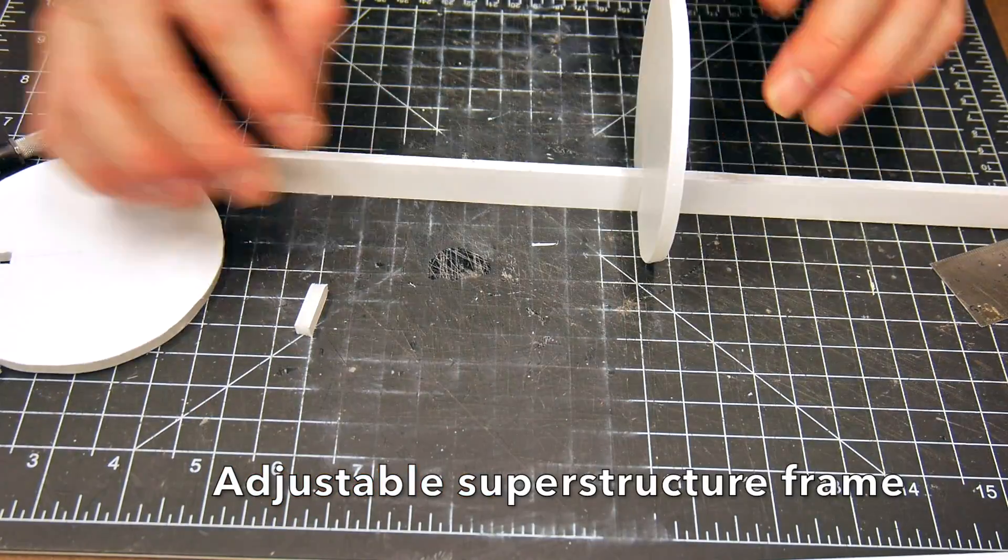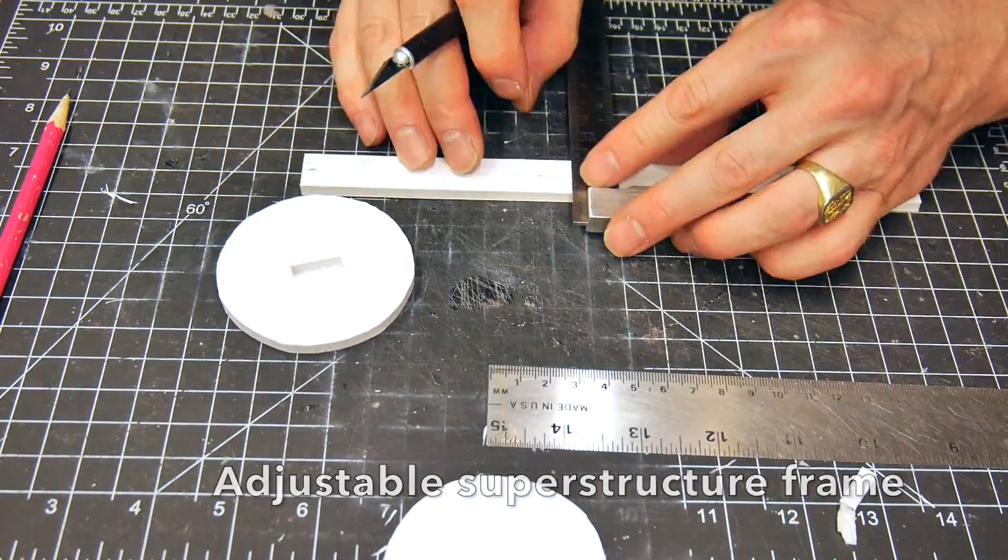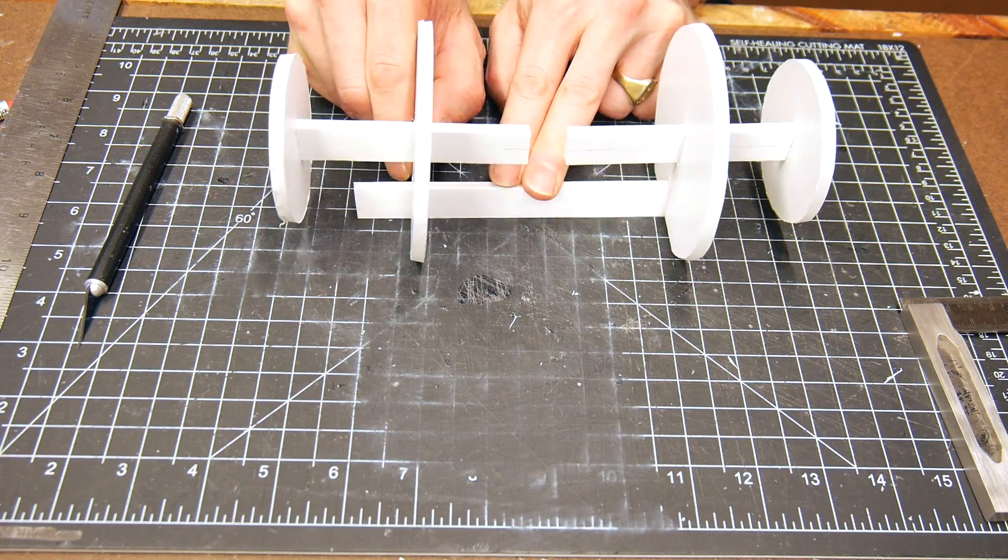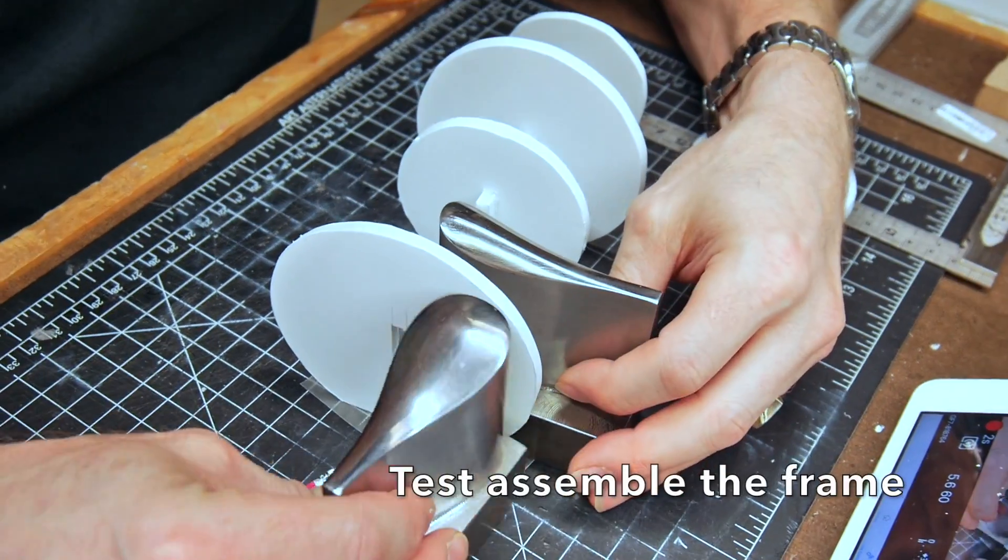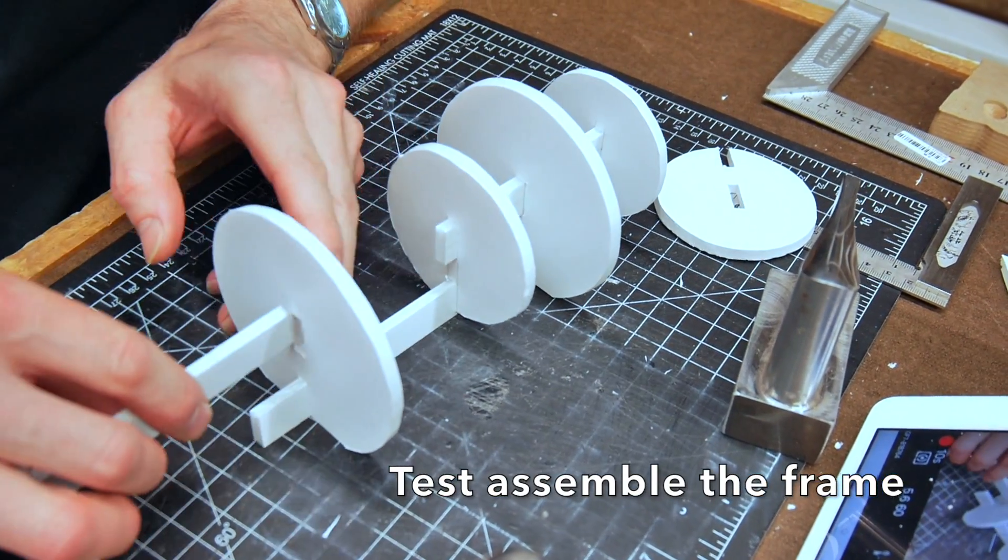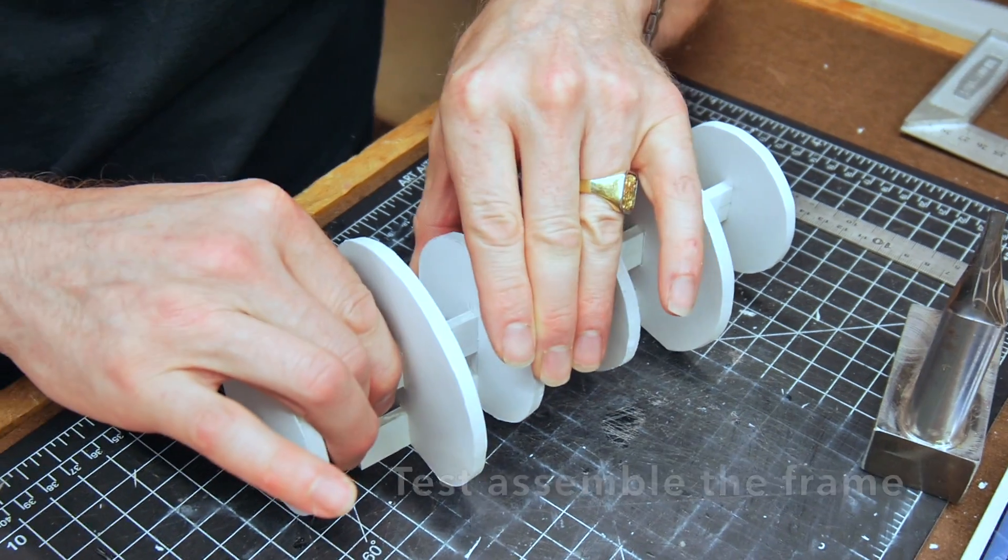So I'm going to start building this mock-up by building a superstructure or a frame that everything is going to be built around. I'm going to build this frame in such a way that it is adjustable, because I am not 100% sure yet about some of the proportions, and I want to mess around with that. Building a frame that is adjustable allows me to do that.